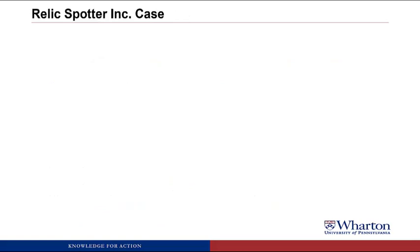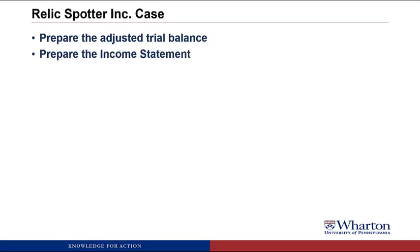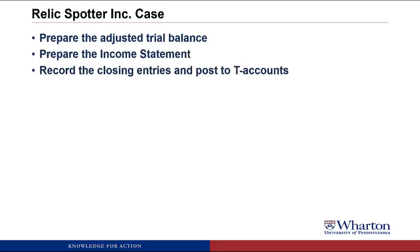To finish up the RelicSpotter case, we're going to prepare the adjusted trial balance, put together an income statement, record the closing entries and post them to T-accounts, and then prepare the balance sheet. I'm going to switch over to Excel to show you how all of this works.